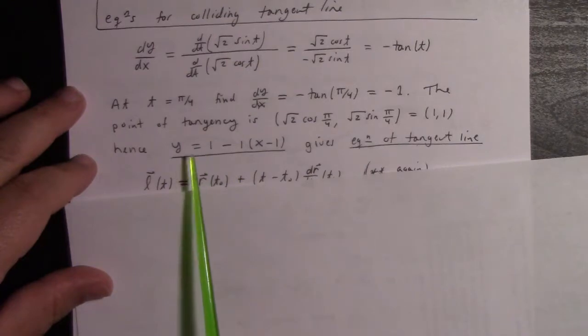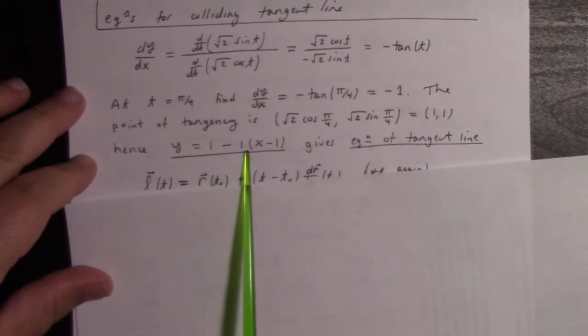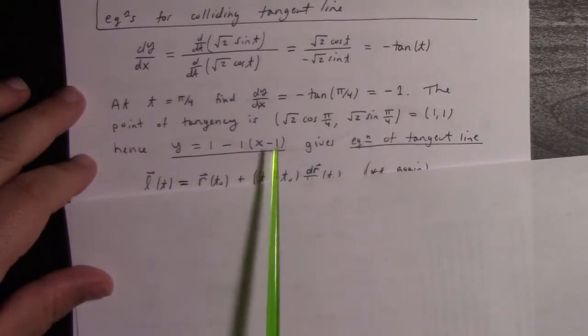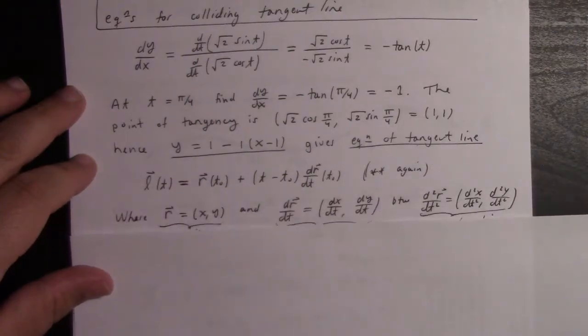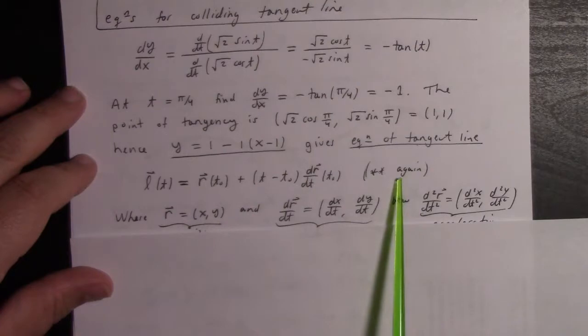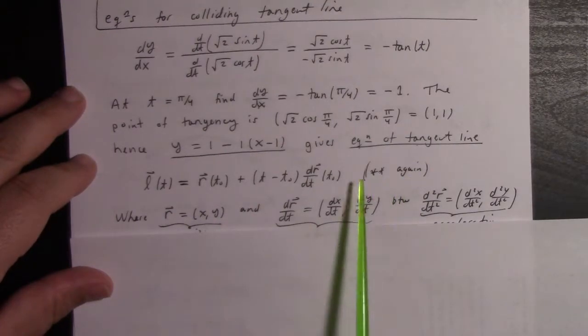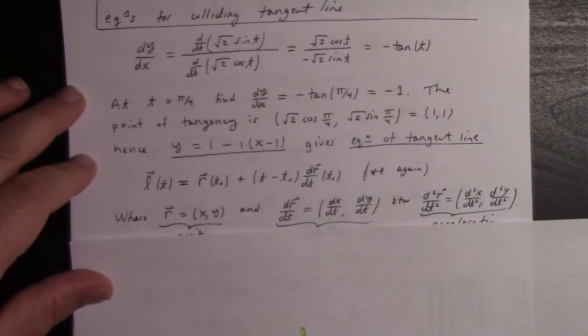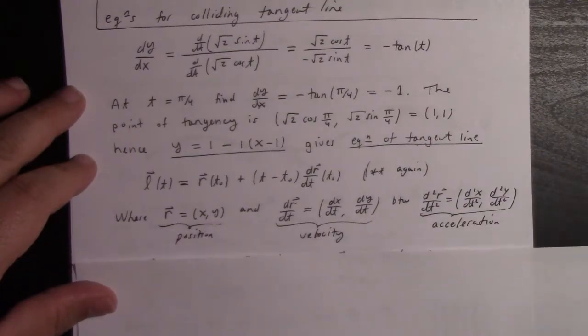So here's the equation of the tangent line: y = 1 - 1(x - 1). But then the parametrization using the colliding tangent line equation, plugging in what I have here...